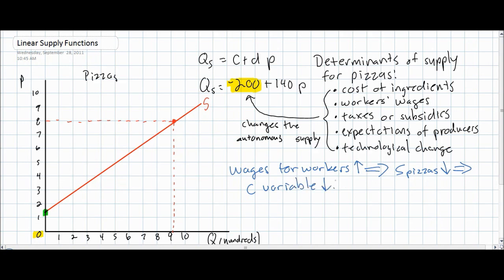Let's say that the increase in wage costs for pizza producers causes the supply of pizzas to change from Qs equals negative 200 plus 140p to Qs equals negative 300 plus 140p. Next, we're going to see how this would affect our supply function and our supply curve.